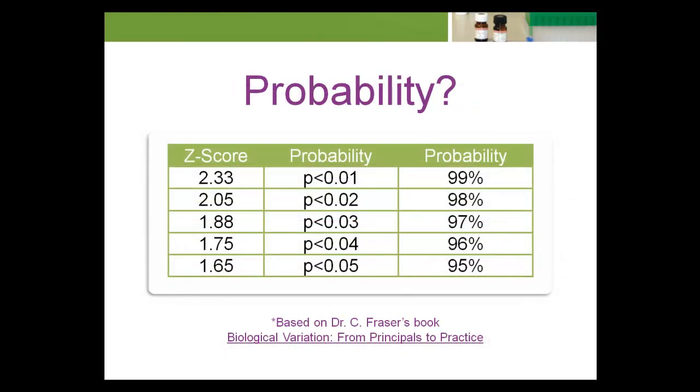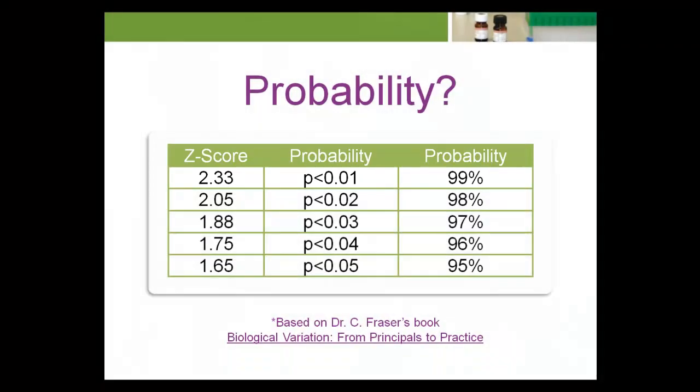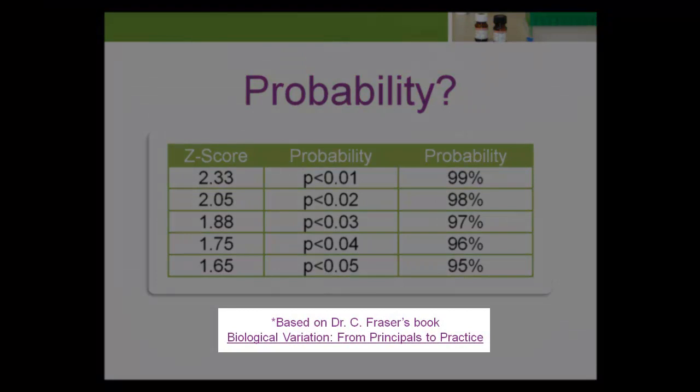To obtain this probability, a z-score of 2.33 was used in the calculation of the TEA. This is based on Dr. C. Fraser's book, Biological Variation, From Principles to Practice.